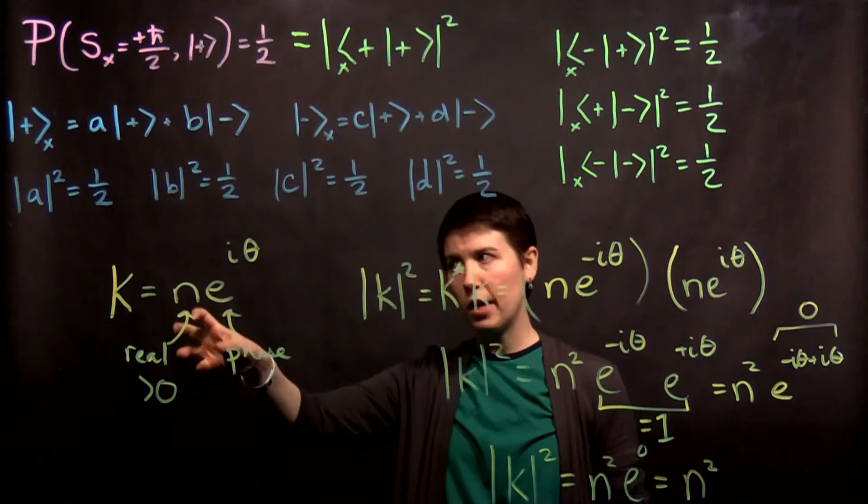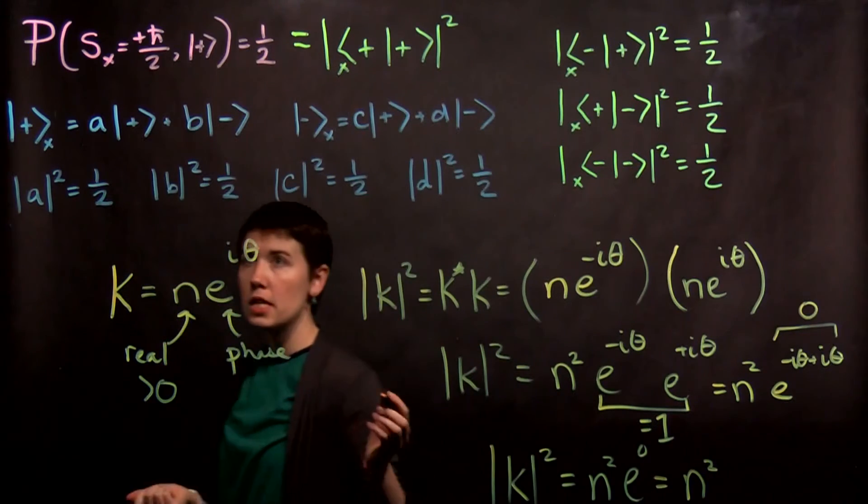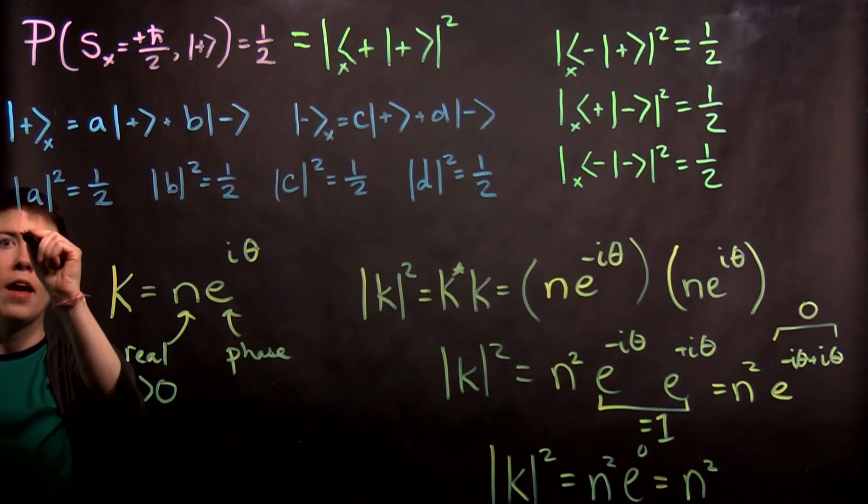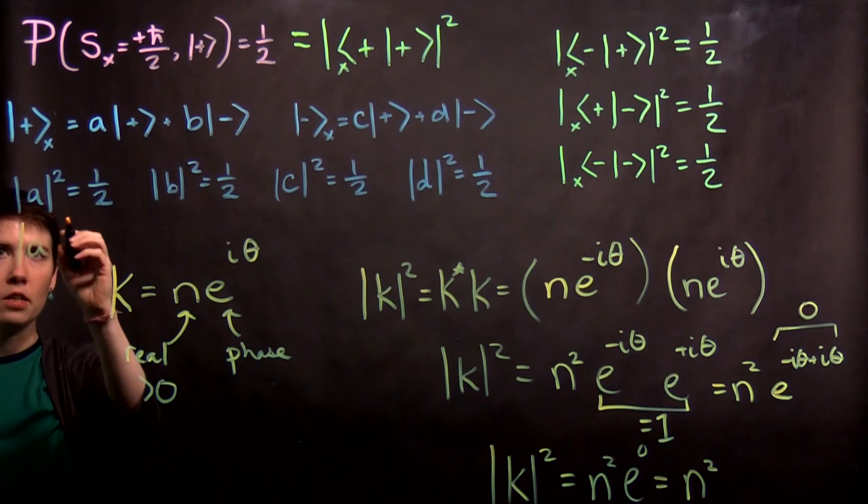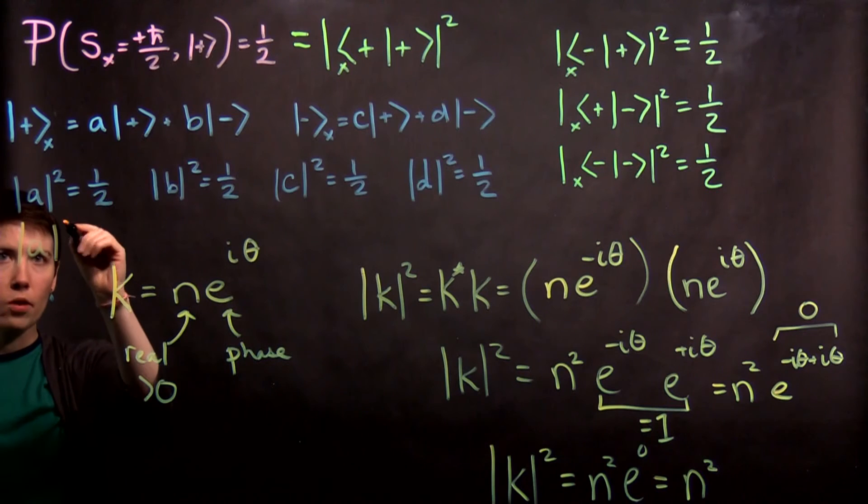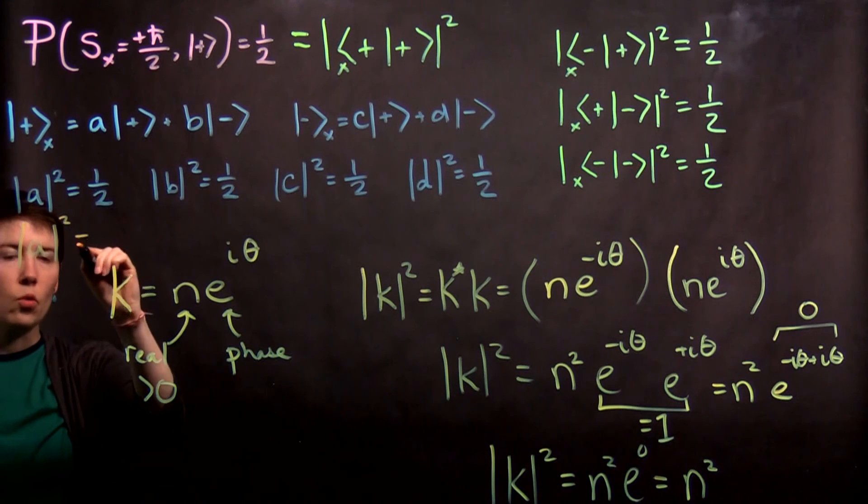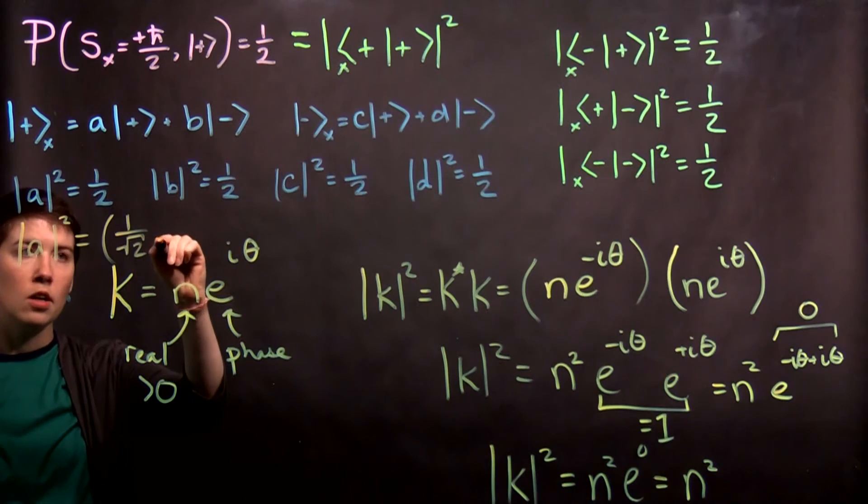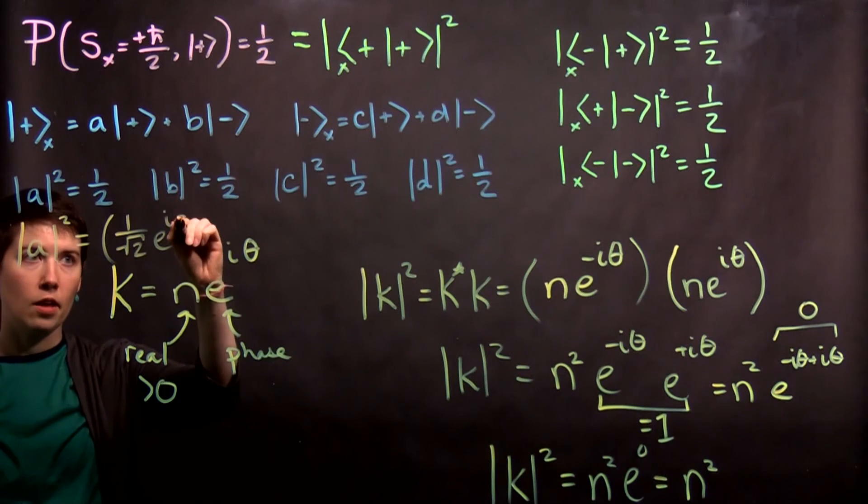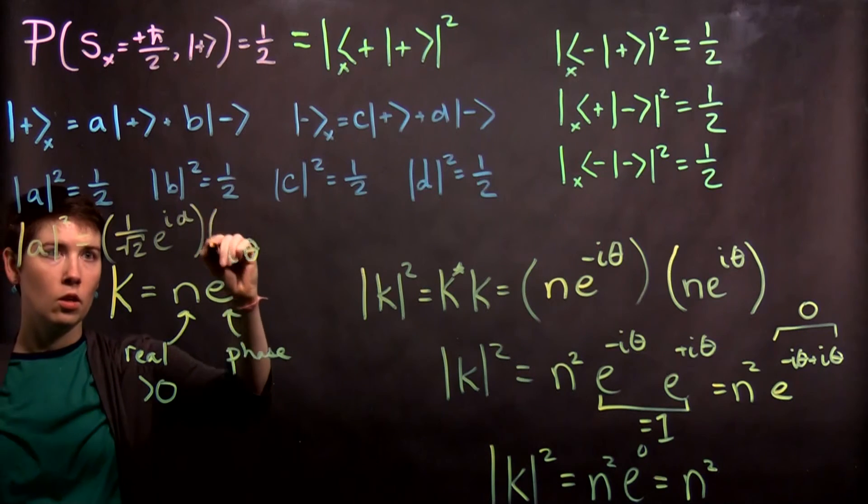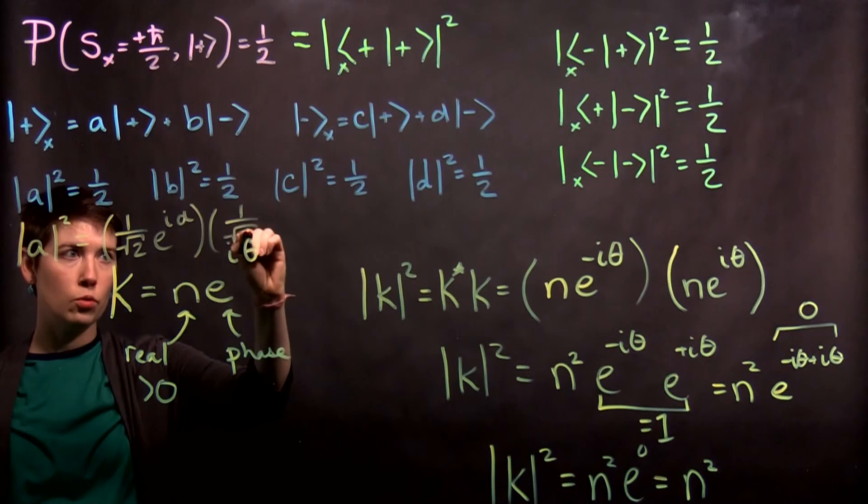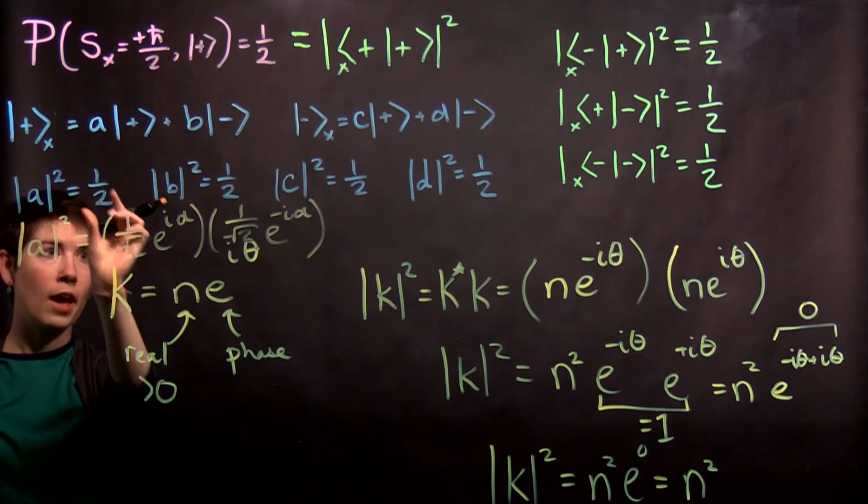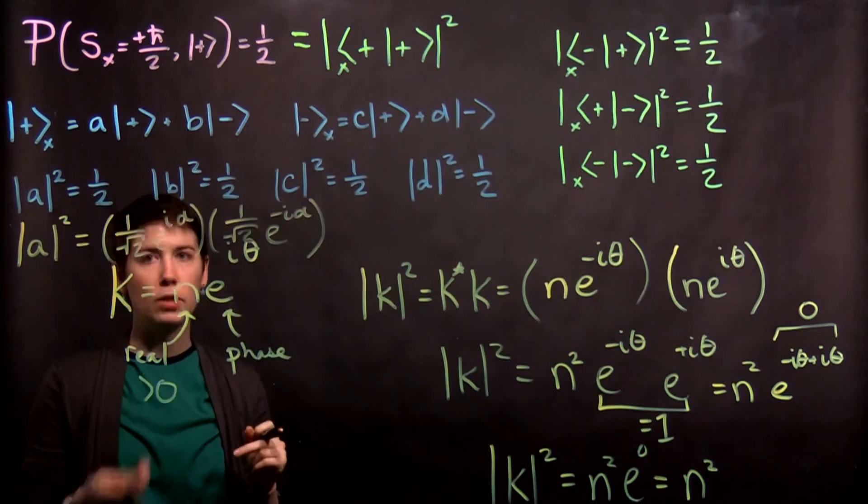So this is the general way to write it. So what this means is up here where you have, for instance, magnitude a squared is 1 half. How we should be writing this then is that we can think about this as going to be 1 over square root of 2 e to the i alpha, 1 over square root of 2 e to the negative i alpha. Right, so that will also give us 1 half, but now we've captured this complex term.